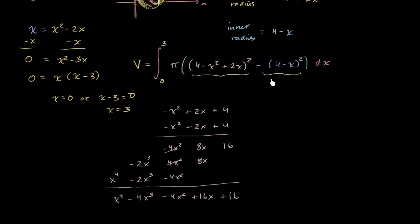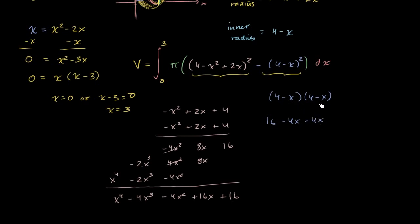And now if we want 4 minus x times 4 minus x, we could do it this way as well. That's just going to be 4 times 4, which is 16, plus 4 times negative x, which is negative 4x, negative x times 4, another negative 4x, and then negative x times negative x is plus x squared. So if we swap the order, we get x squared minus 8x plus 16.